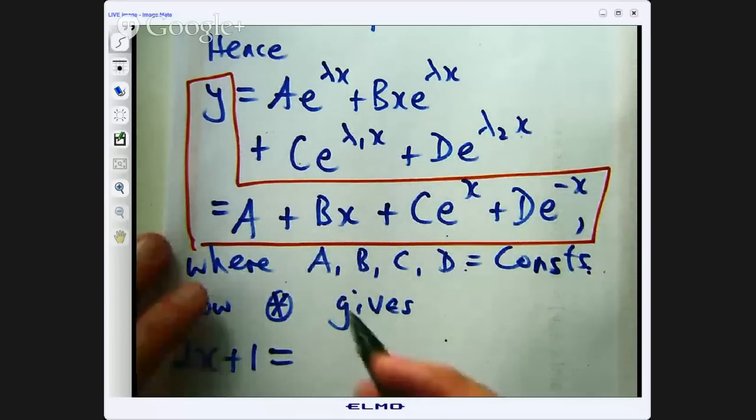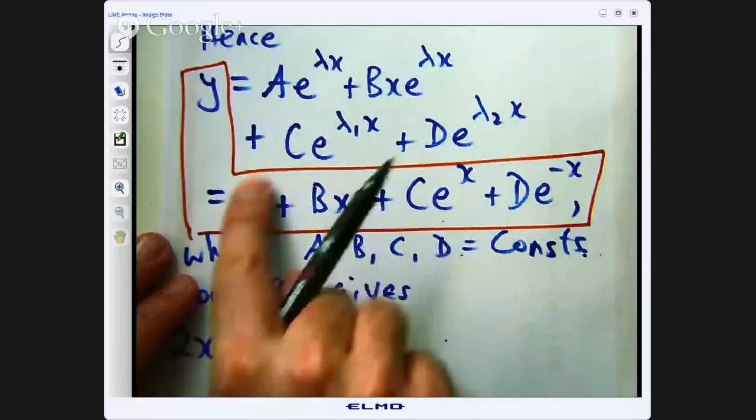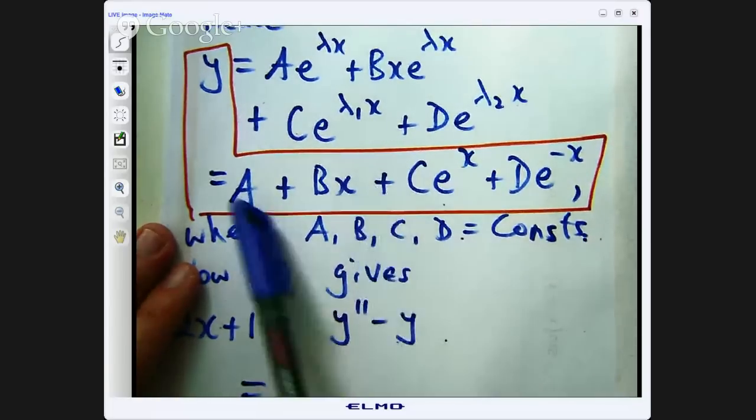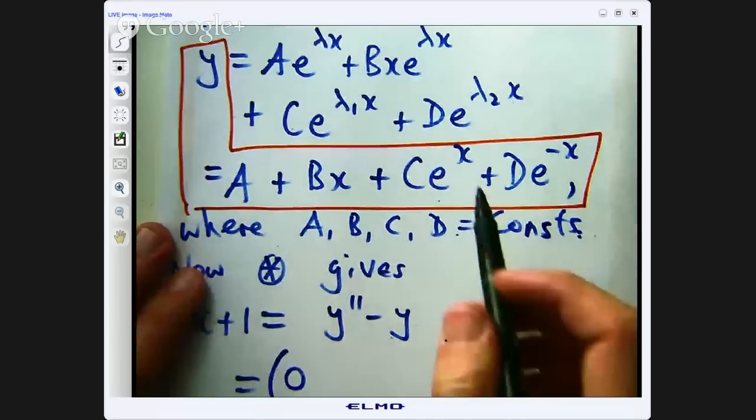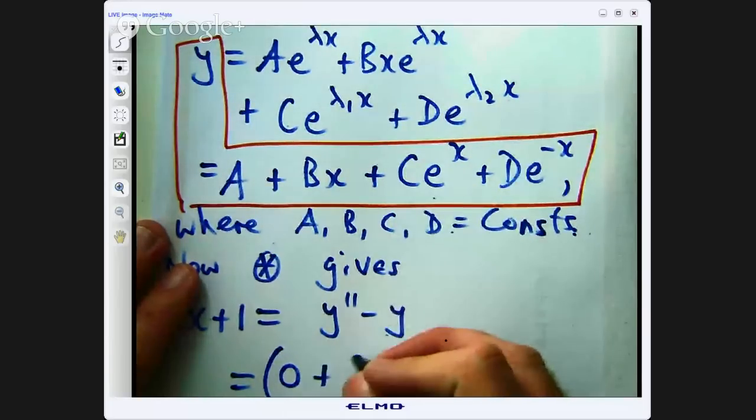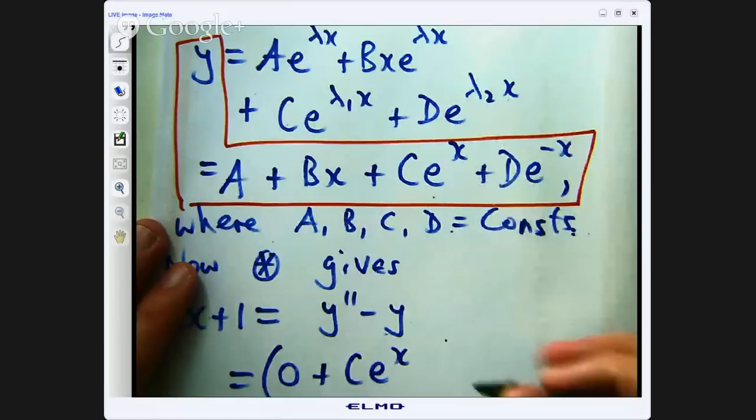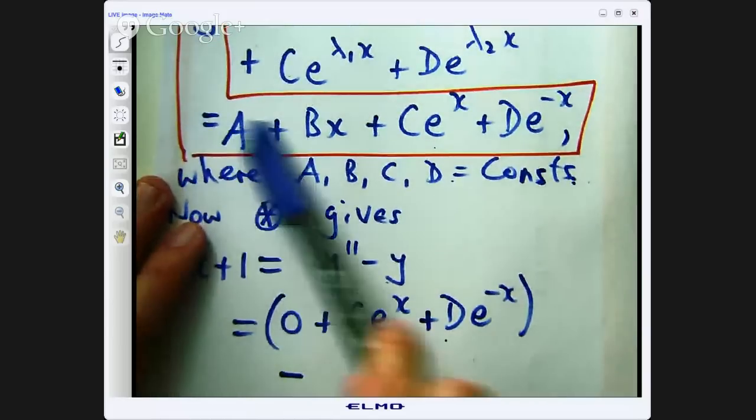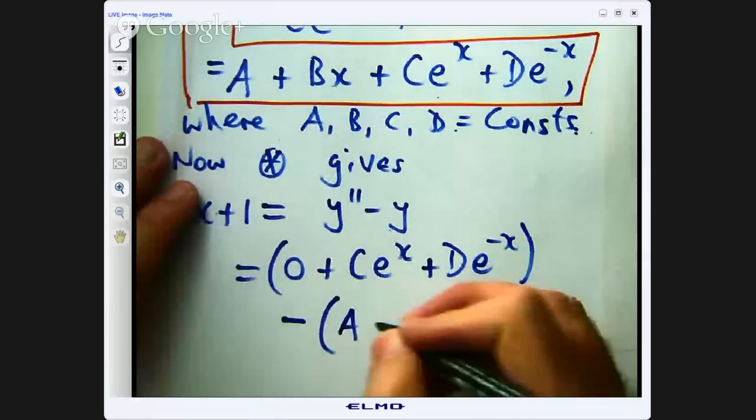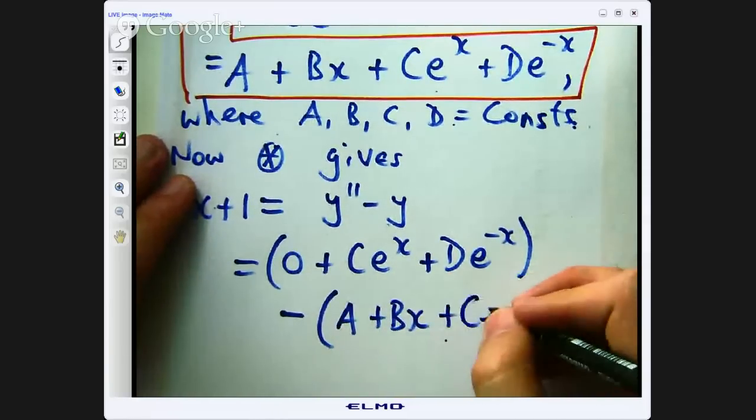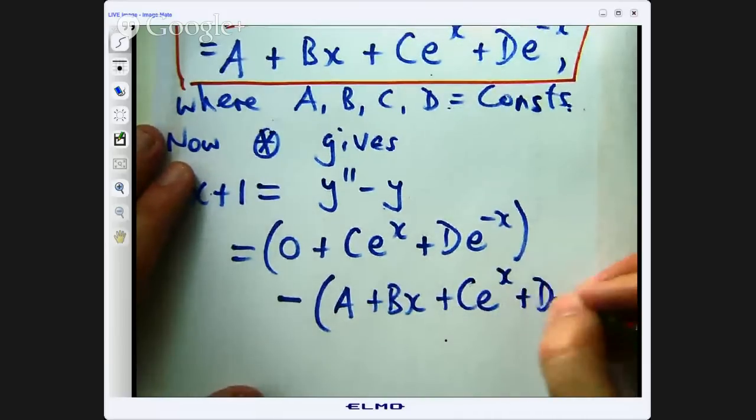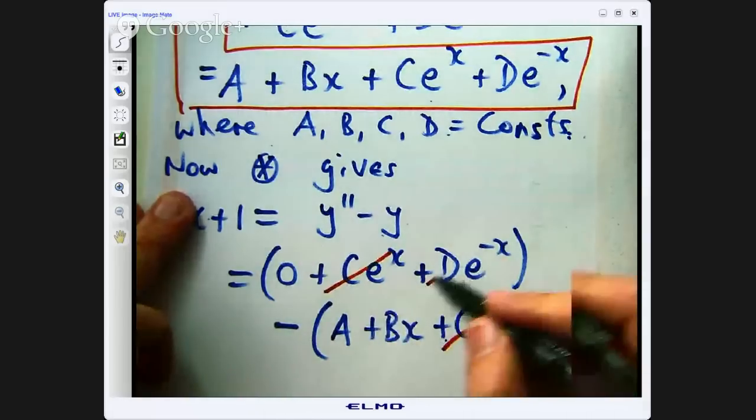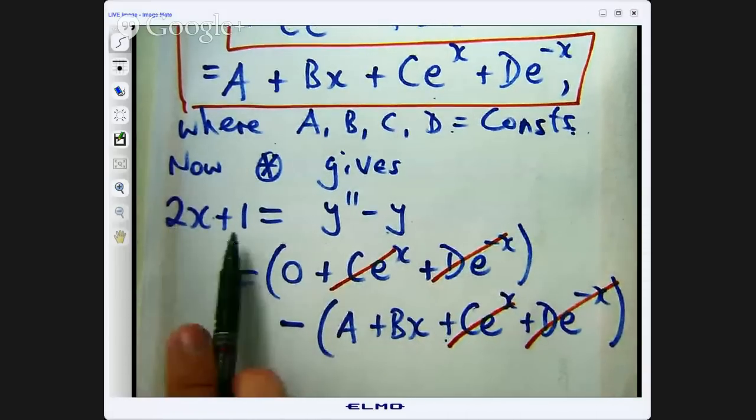So I am going to get 2x plus 1, and then I want y'' - y. So let us differentiate this twice and take away this from that. So if I differentiate this twice, it is a linear function, so I am going to get 0. If I differentiate this twice, I am going to get ce^x, that minus is going to come down and then another minus, so plus de^(-x). So that is y'' minus this whole thing here. Now you can see what is going to happen. That is going to cancel with that, that is going to cancel with that, that is going to cancel with that. And what are we left with? We are left with 2x plus 1 on the left hand side minus a minus bx on the right hand side.